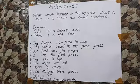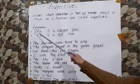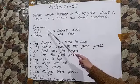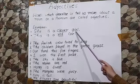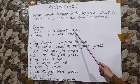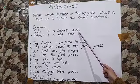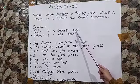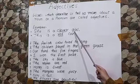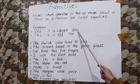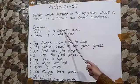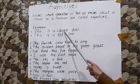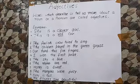Now children, let us see some examples. She is a clever girl. Now girl is a noun in this sentence and what is being described about the girl? That she is clever. So clever is an adjective in this sentence.